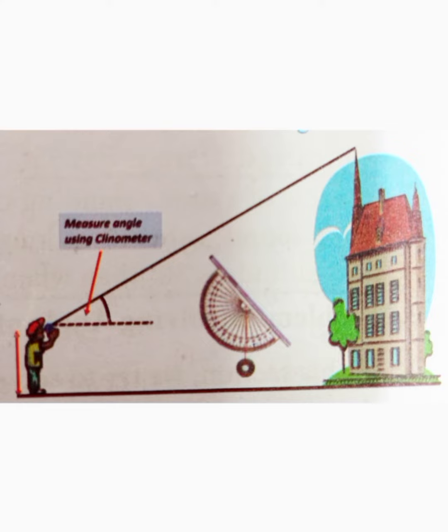To find the height h of the object, use the following equation: h = x + y tan theta, where x represents the distance from your eye level to the ground.